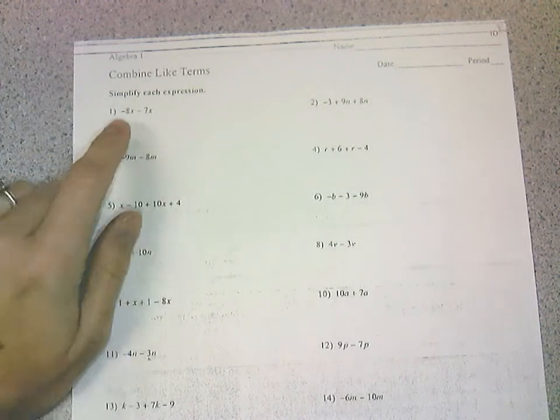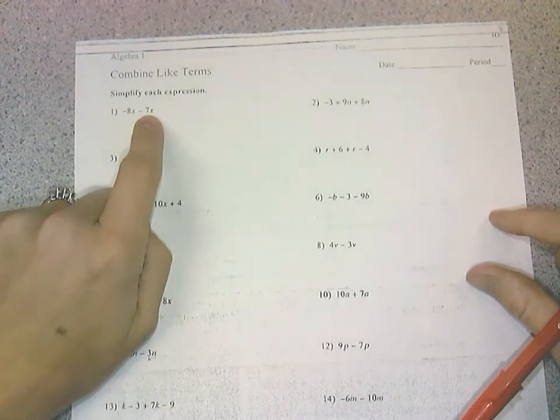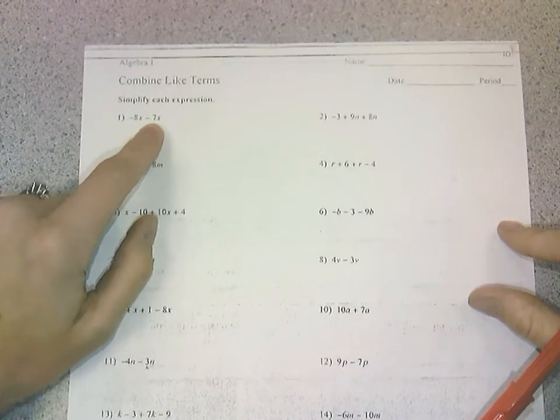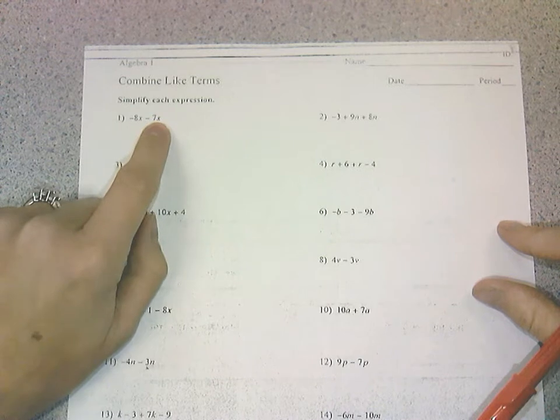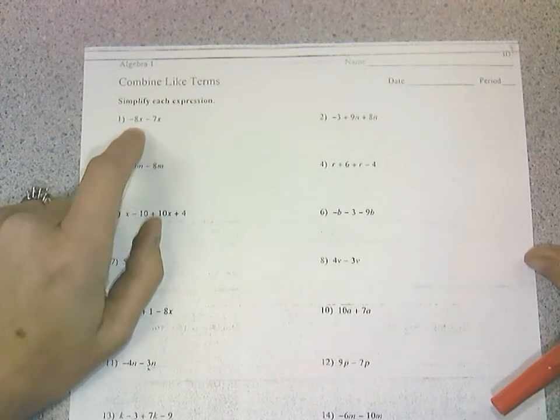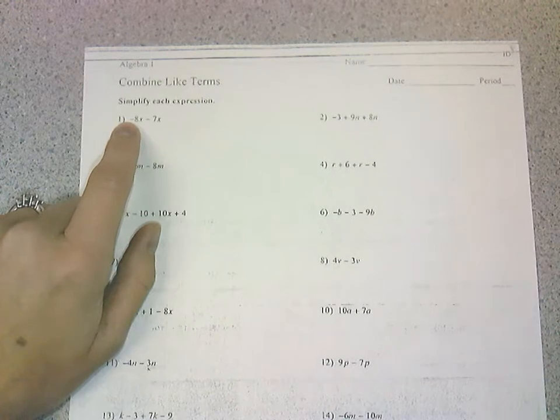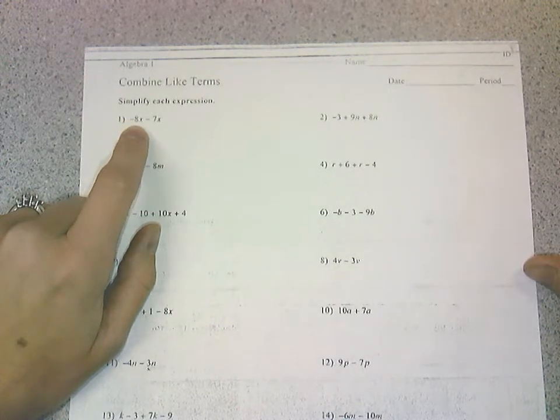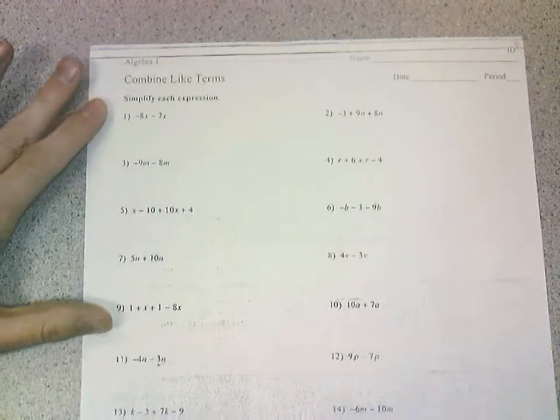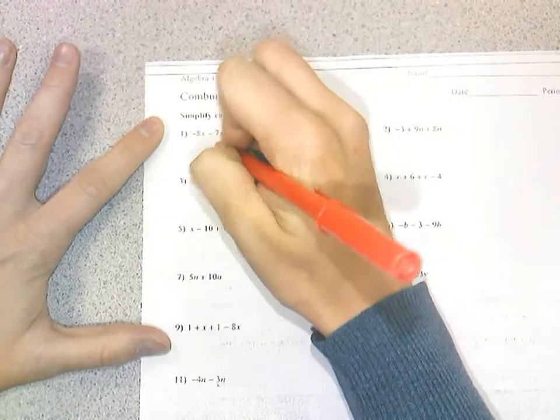For example, this negative 8x and this negative 7x are like terms, not because they're both negatives, but because they both have the letter x next to them. Because they're like terms, then we can combine them. So we add them together. Negative 8x minus 7x is negative 15x.